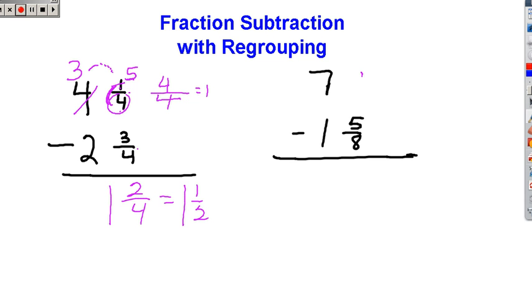So what do we do? Well, let's consider this to be 0 eighths, right? So we have 0 eighths take away 5 eighths. We're going to do it very much the same as this one. Borrow from the 7. Make it a 6.